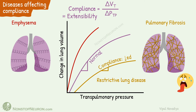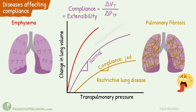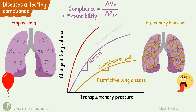One such disease is emphysema. In this, lung tissues are destroyed, so lungs become floppy and it's easy to inflate them. The compliance diagram in this situation falls here — the same increase in transpulmonary pressure causes more increase in lung volume. Thus, compliance is increased.